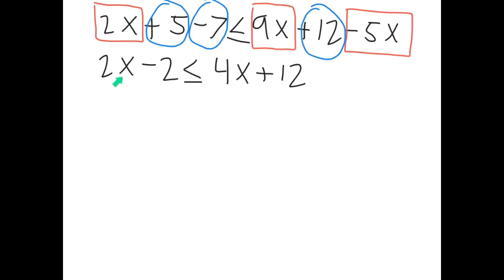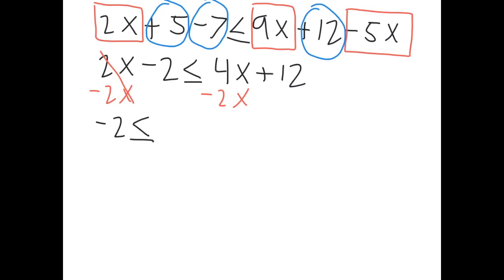Now we have variables on both sides, so we find the smallest one — 2x — and bring it over. It's positive, so we subtract it. Subtract 2x from both sides. On the left side, that leaves us with just negative two because the 2x cancels. Still no sign change — less than or equal to stays, because we didn't multiply or divide by a negative number.